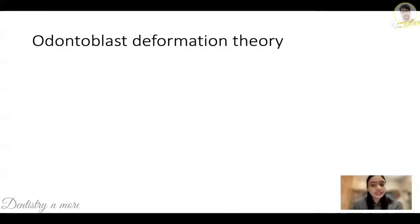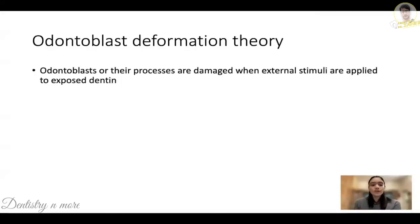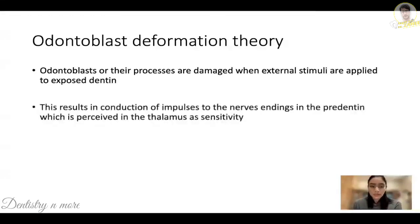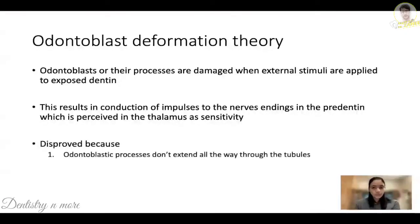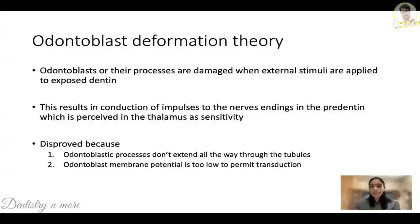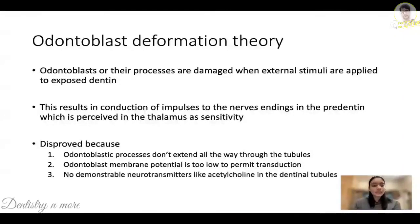The odontoblast deformation theory states that odontoblasts or their processes are damaged when external stimuli are applied to exposed dentin, resulting in conduction of impulses to the nerve endings present in the pre-dentin and the pulp, which is perceived in the thalamus as sensitivity. This theory was also disproved because the odontoblastic processes do not extend all the way to the end of the dentinal tubules near the DEJ, yet most stimuli are applied in that region. The odontoblastic membrane potential is also too low to permit transduction over such a great range, and no demonstrable neurotransmitters like acetylcholine were found in the dentinal tubules.